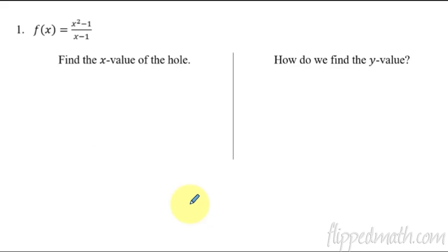So the first one we're gonna start off very easy, and that is first identify where is the x value of the hole. So this thing, let's rewrite this factored, this is just the difference of squares on top, x minus 1 times x plus 1, and then on bottom we have an x minus 1 still.